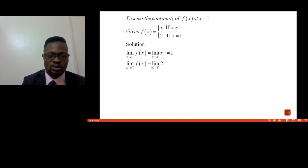Like we did previously, the limit as x approaches 1 from the negative is x, which means x is 1, and the limit as x approaches 1 from the positive side is 2.